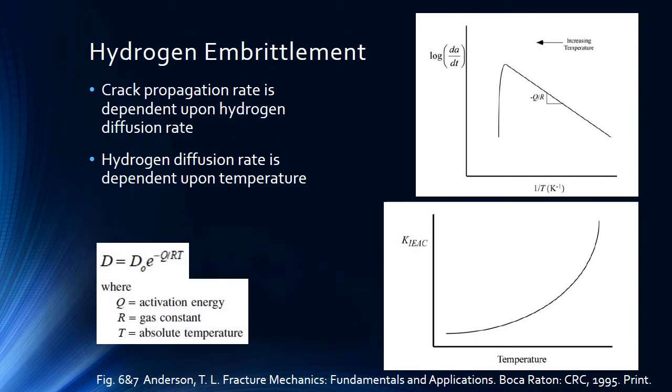For hydrogen embrittlement, the crack propagation rate is dependent upon the temperature. As the temperature increases, the diffusion rate also increases. You can see from the graph on the top right how the increase in temperature affects the crack growth rate. On the bottom right, you can see as the temperature increases, the critical stress intensity factor also increases.